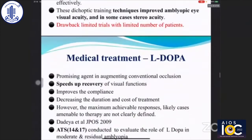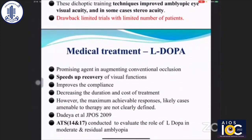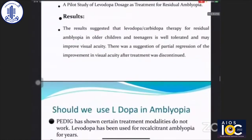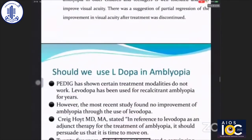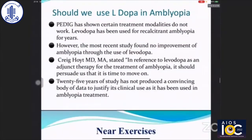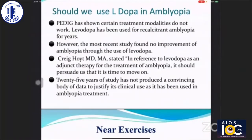Levodopa-carbidopa was thought to be a promising agent in augmenting conventional occlusion — it speeds recovery of visual function, improves compliance, and decreases duration and cost of treatment. ATS-14 and ATS-17 were conducted regarding its role. However, most recent studies found no improvement for amblyopia through use of levodopa. Dr. Hoyer et al. studied levodopa as adjunct therapy and concluded it is time to move on — 25 years of study has not produced a convincing body of evidence to justify its clinical use.